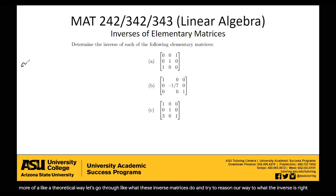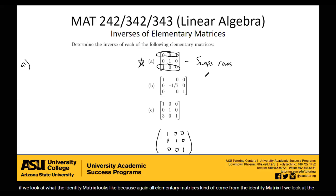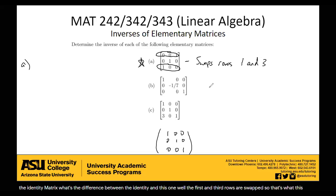So let's look at the first one — we're trying to find the inverse of this matrix. What kind of elementary matrix is this? Well, this is the one that swaps rows. If we look at the identity matrix, because all elementary matrices come from the identity matrix, what's the difference between the identity and this one? Well, the first and third rows are swapped. So that's what this elementary matrix does: it swaps rows one and three.